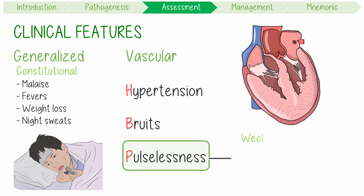Pulselessness or weak pulses is most common in the radial arteries and is often asymmetric. This is due to insufficient flow from upstream stenosis.